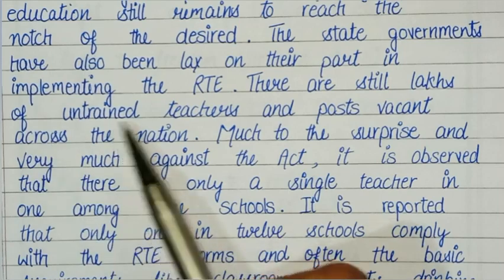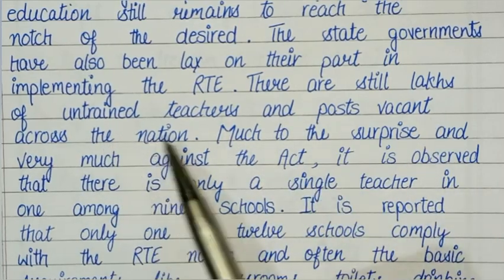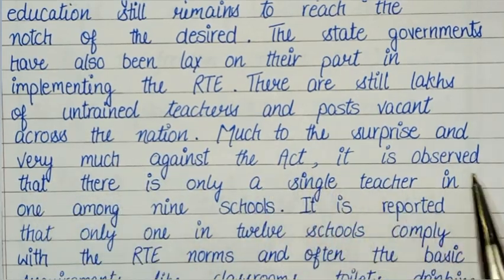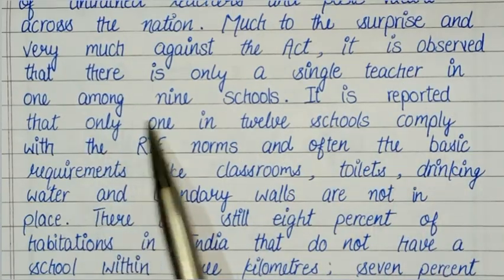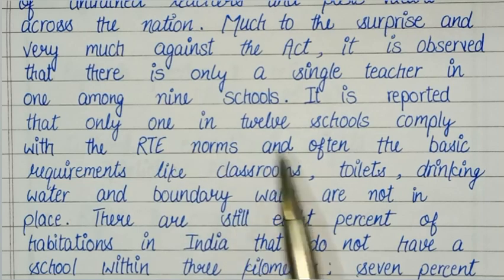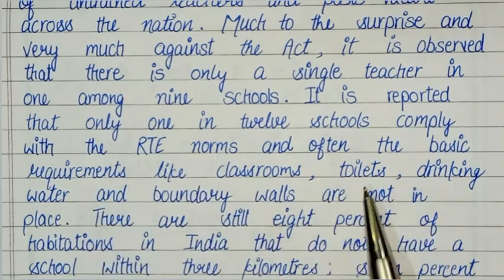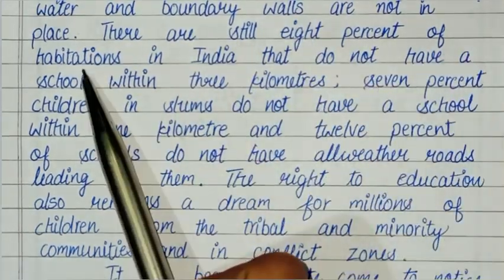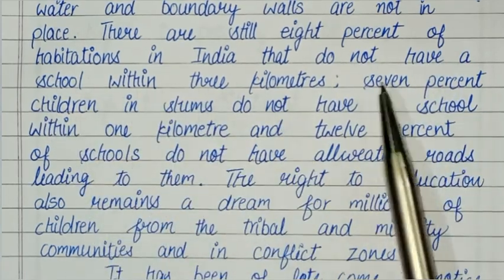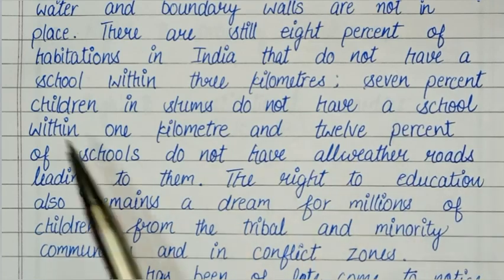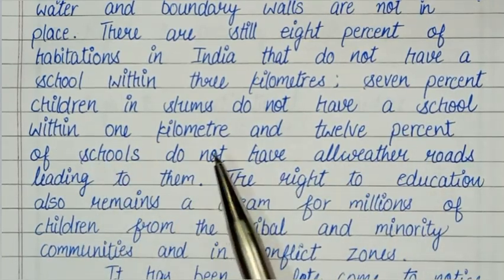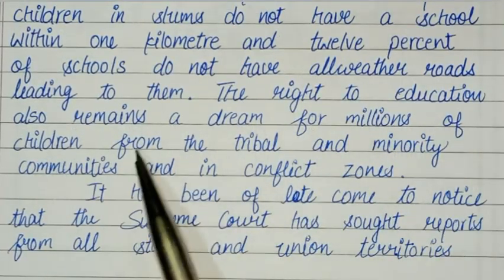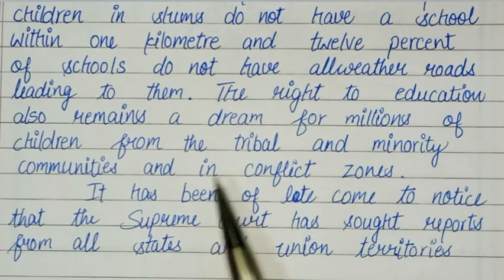There are still large numbers of untrained teachers and vacant posts across the nation, contrary to the act. It is observed that there is only a single teacher in one in every nine schools, and only 1 in 12 schools comply with RTE norms. Often basic requirements like classrooms, toilets, drinking water, and boundary walls are not in place. Around 8% of habitations in India do not have a school within 3 kilometers, 7% of children in slums do not have a school within 1 kilometer, and 12% of schools do not have all-weather roads. Access to the right to education remains a dream for millions of children from tribal and minority communities and in conflict zones.